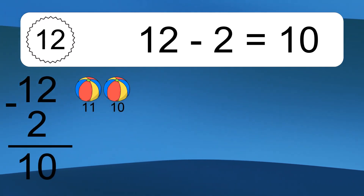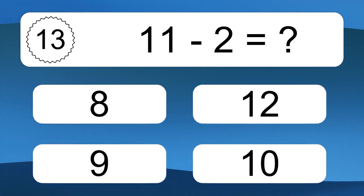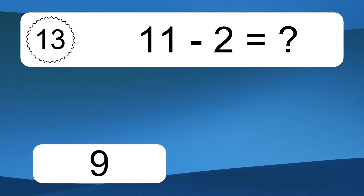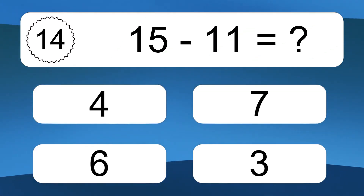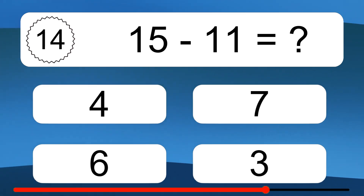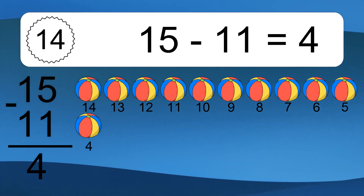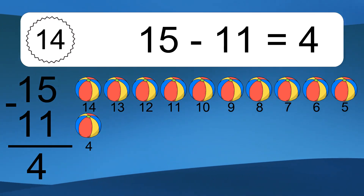12 minus 2 equals 10. Let's count it: 11, 10. 11 minus 2 equals what? 11 minus 2 equals 9. Let's count it: 10, 9. 15 minus 11 equals what? 15 minus 11 equals 4. Let's count it: 14, 13, 12, 11, 10, 9, 8, 7, 6, 5, 4.